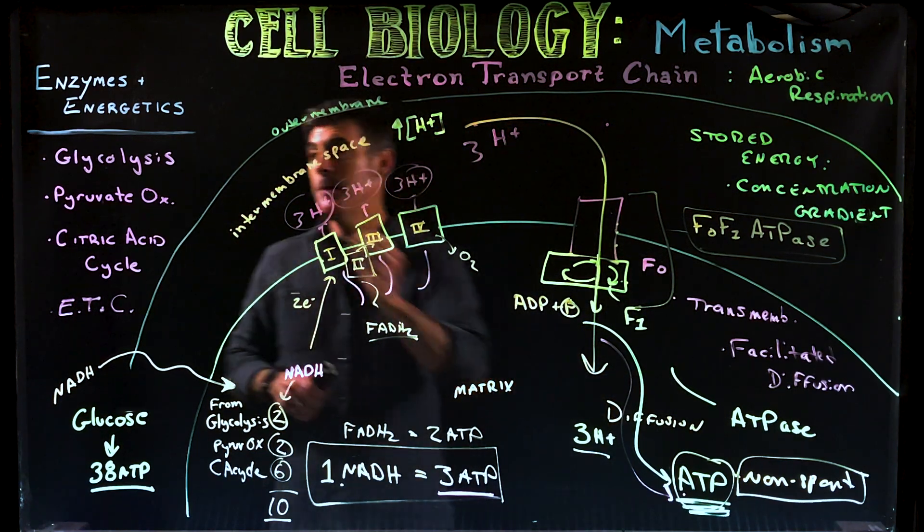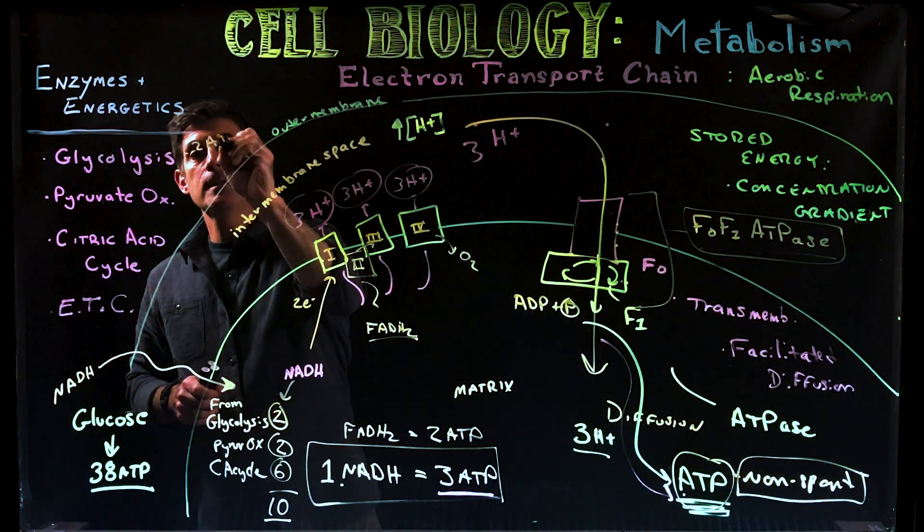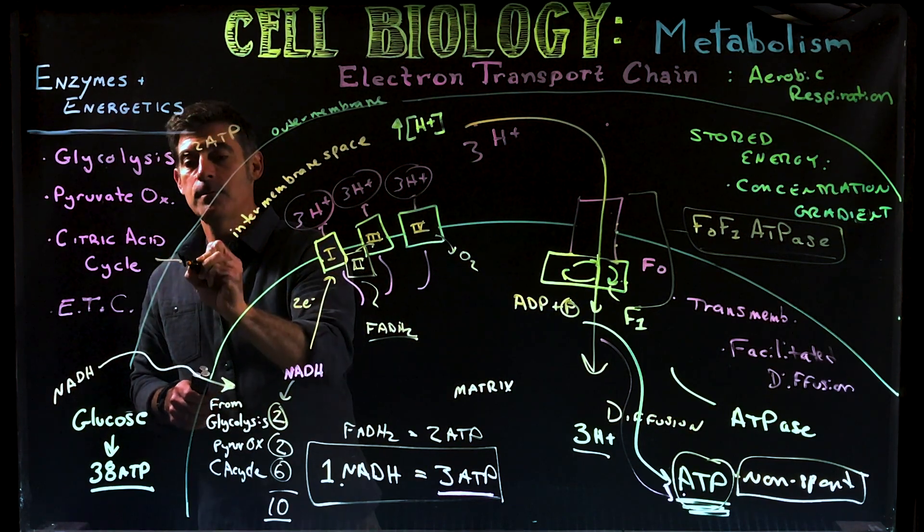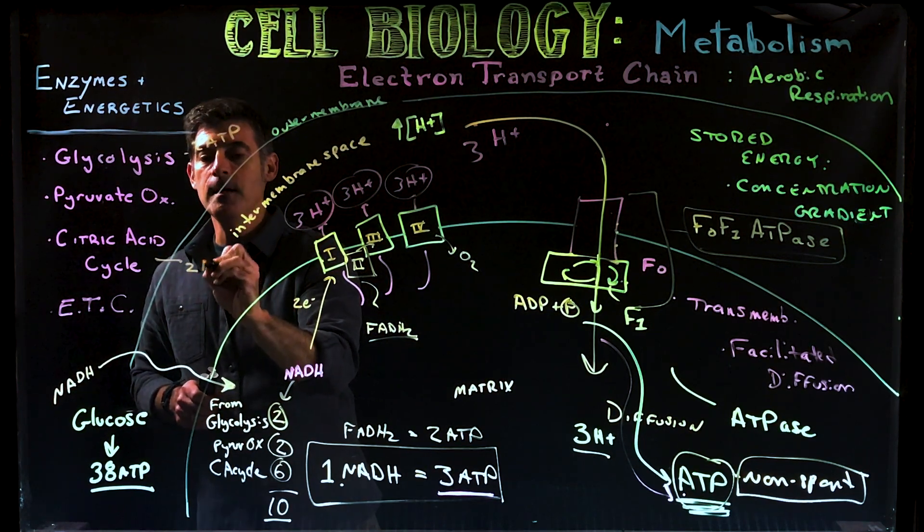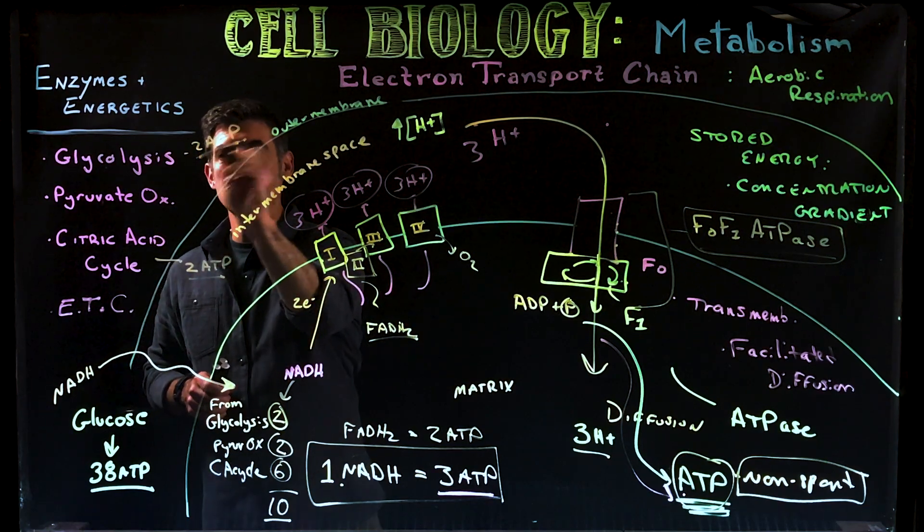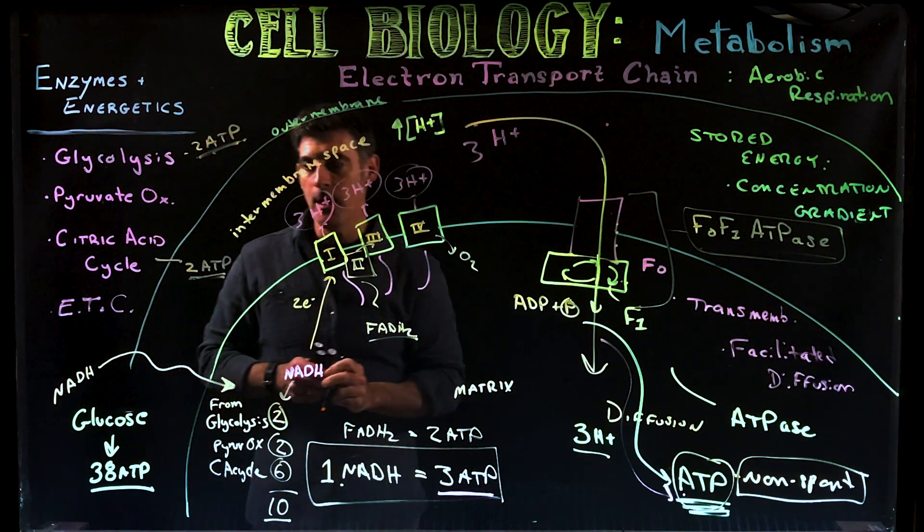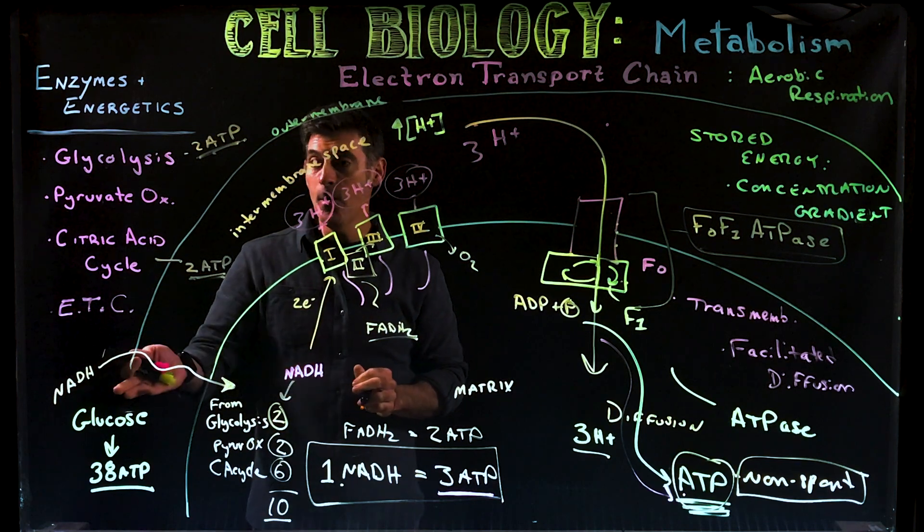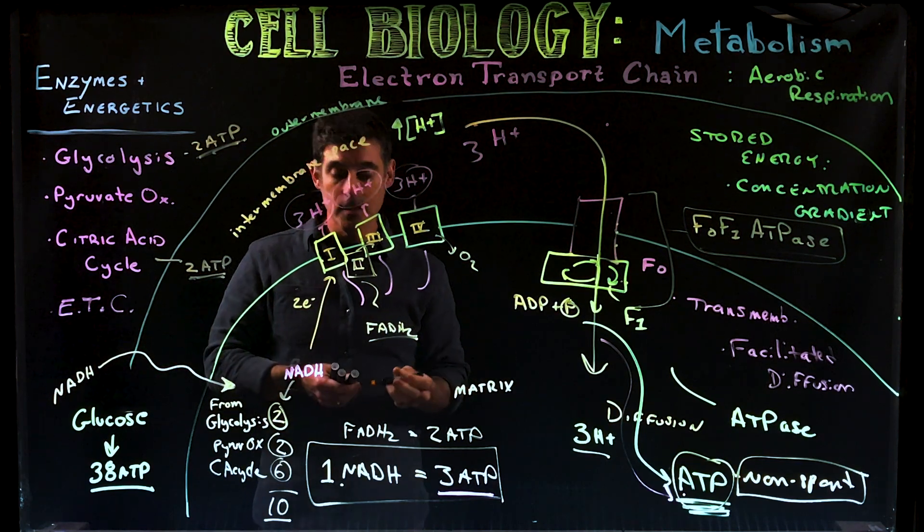A few of the ATP being made here. We got two ATP here. Two technically, remember, GTP, but we'll call them ATP here. These are substrate level phosphorylation directly made during those processes. But all the rest are going to be made by oxidative phosphorylation.